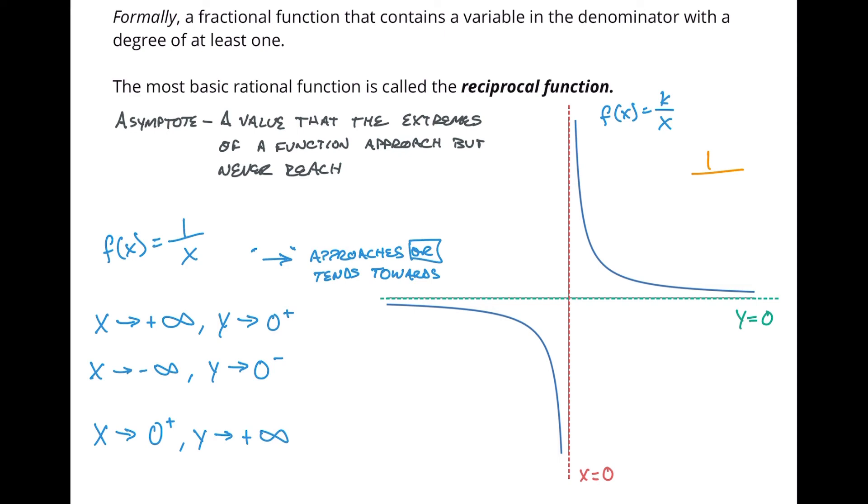Like a really small number might be something like 1 over 10,000, right? That's a really small number. Well, that equals 10,000, right? So what's happening is as we go towards a really small number here, we're going to a really big number there. So y is approaching positive infinity.